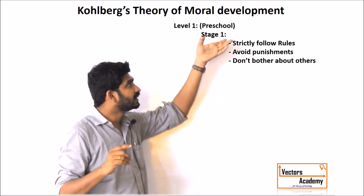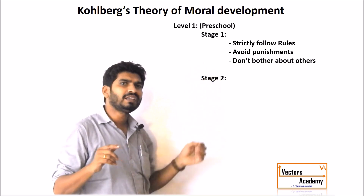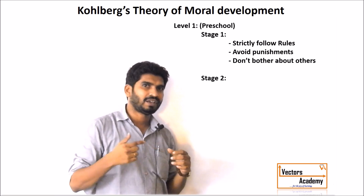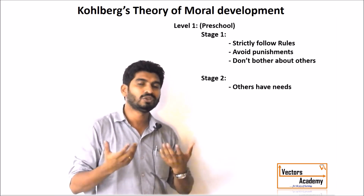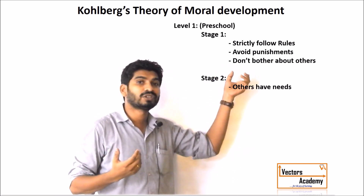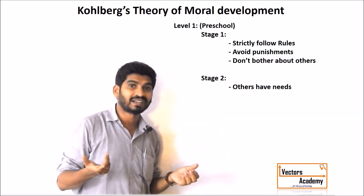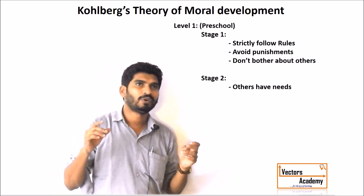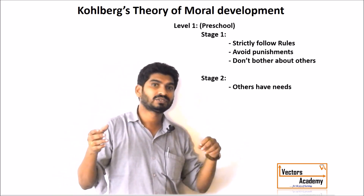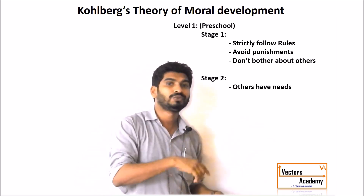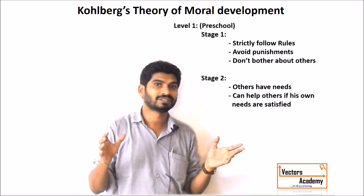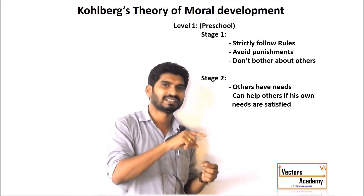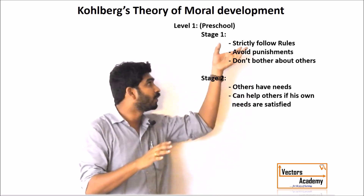Once the mind develops, you move on to stage two. In stage two, they realize that others also have certain needs — it is not just them. Others also have needs and they can be satisfied. So what they do is seek mutual cooperation. For example, a student says to another student: 'You do my maths homework, I will do your English homework.' They will satisfy their own needs and if possible, help others as well.